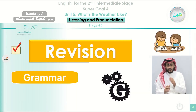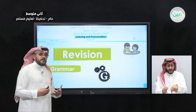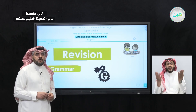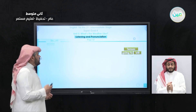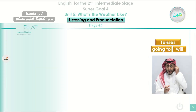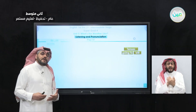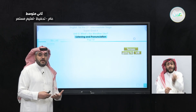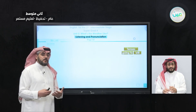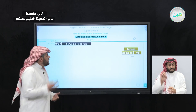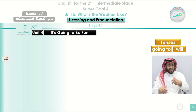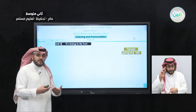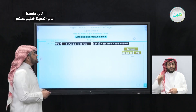Before we start our main class on listening and pronunciation, let's make a quick revision on the previous lesson. In the previous lesson, we studied how to make the future tense and how to deal with the auxiliary verb 'will.' You remember in unit 4, we studied 'it's going to be fun.' 'Going to' indicates something in the future. This unit, 'What is the weather like?' is a question about climate or weather.